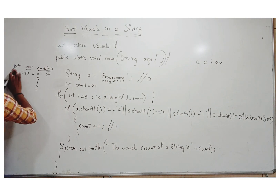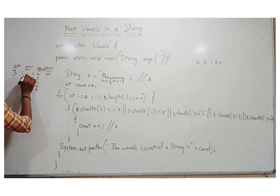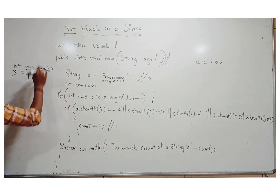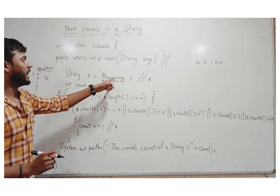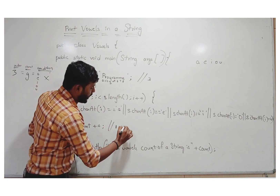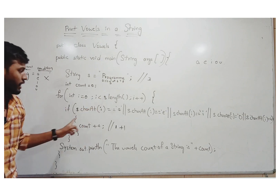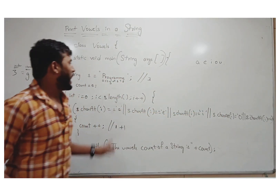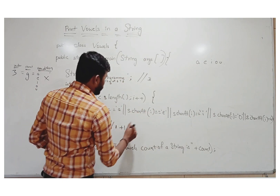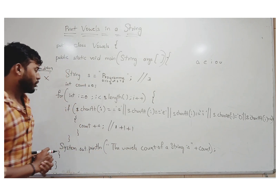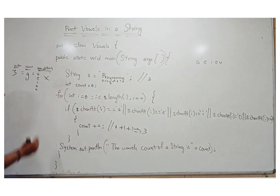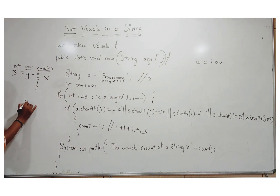At index three, the character is 'g'. G is not equal to a, e, i, o, or u — not printed. Then we check 'r', condition not satisfied. When we reach 'a', it satisfies the condition and the count increments. Then 'm' does not match any vowel. Finally, 'e' satisfies the condition, so count increases again. The total count is now three.